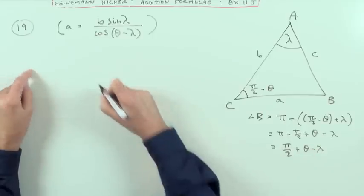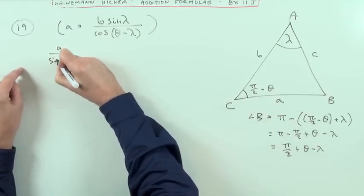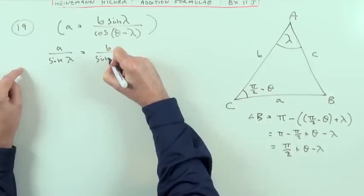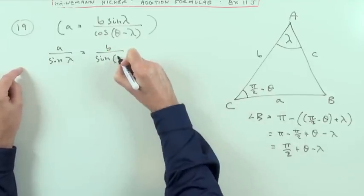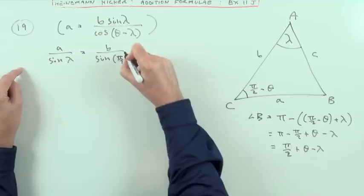Now I can write out the expression. What have I got here then? So it would be A over the sine of its angle, which is lambda, would be B over the sine of its angle, which is pi upon 2 plus theta minus lambda.